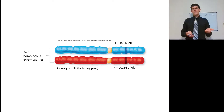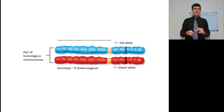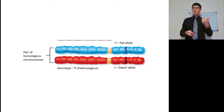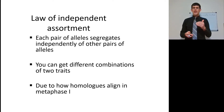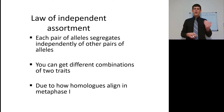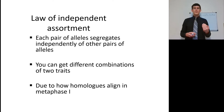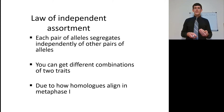The genotype here is Tt — it's a heterozygote for the tall allele. These are supposed to be one gene on one chromosome. What we've assumed is the law of independent assortment: that each pair of alleles segregates independently of other pairs of alleles. So those tall genes are going to sort independently of purple flowers and white flowers, giving two different combinations of traits.